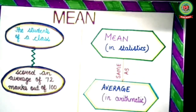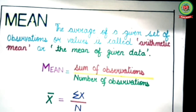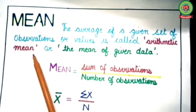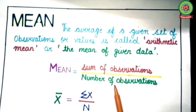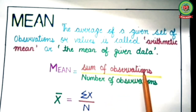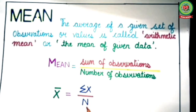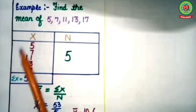Mean in statistics is the same as average in arithmetic. The definition of mean: the average of a given set of observations or values is called arithmetic mean, or simply the mean of the given data. In short, mean equals sum of observations upon number of observations. Here x̄ denotes mean, sum of observations is denoted by Σx, and number of observations is denoted by capital N.